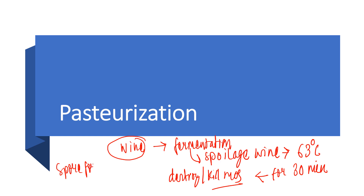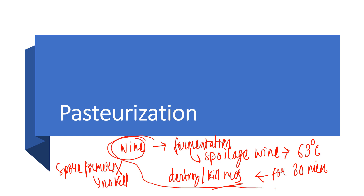Spore-forming bacteria won't be destroyed or killed by this technique, but it can kill non-spore-forming bacteria. This technique was used at the time in Europe in order to avoid the spoilage of wine.